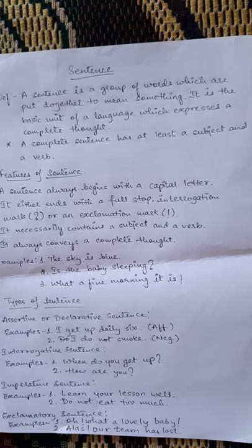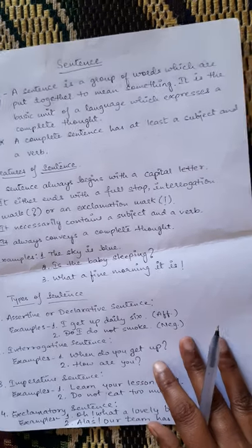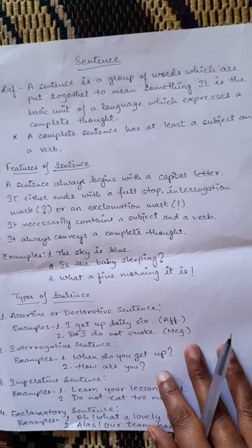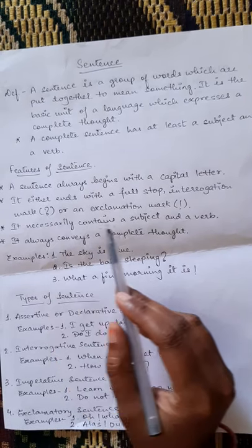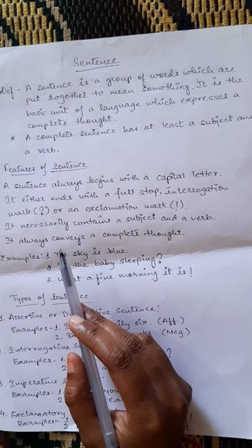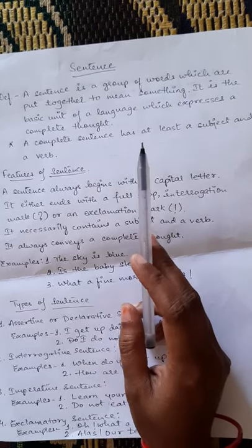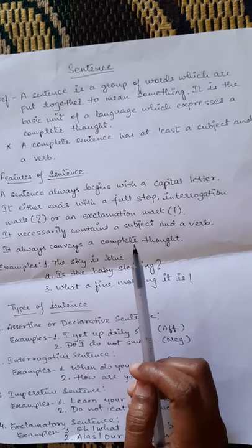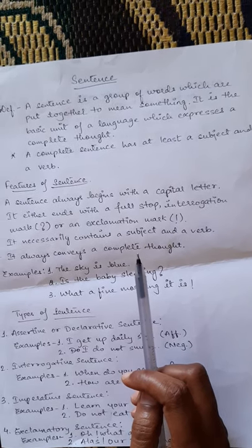Now we proceed to our topic: features of a sentence. First, a sentence always begins with a capital letter. Second, it either ends with a full stop, an interrogation mark — which is known as a question mark — or an exclamation mark. Third, it necessarily contains a subject and a verb, as explained in the definition. And last, it always completes a complete thought of a particular subject like a person or place.